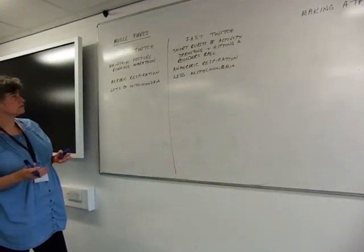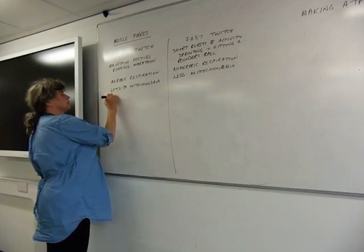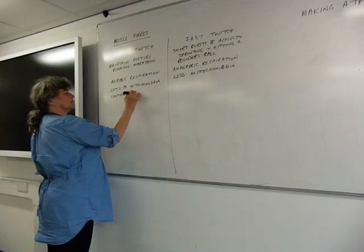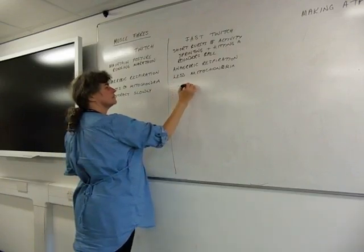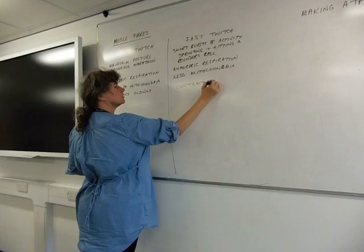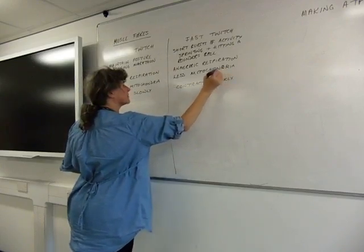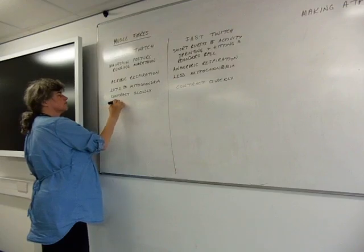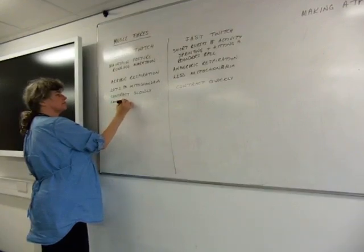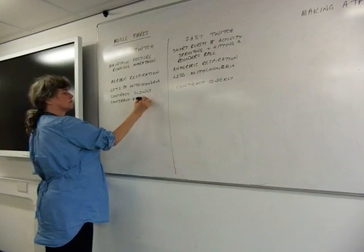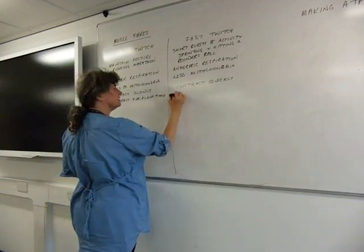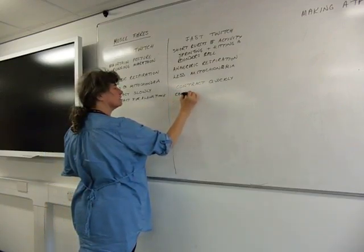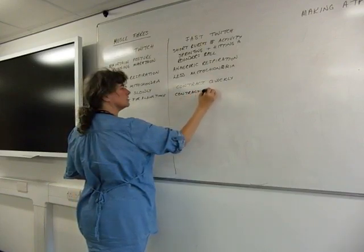The reason that they're called slow twitch and fast twitch is that slow twitch muscles contract reasonably slowly by that ratchet mechanism, whereas fast twitch muscles contract quickly. These can contract for a long time. Unsurprisingly, these don't contract for a long time. These are contracting for a short time only.